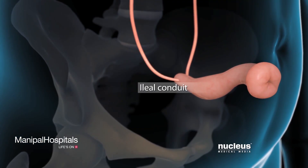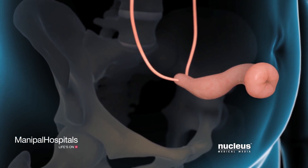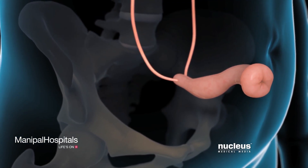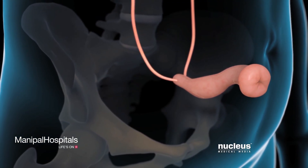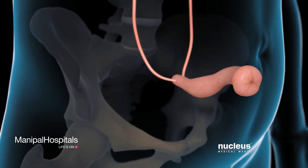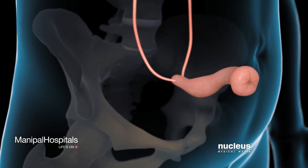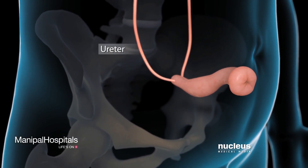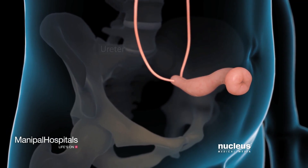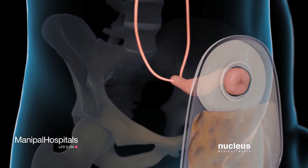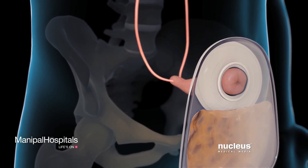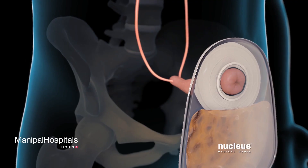If you receive an ileal conduit, one end of the intestinal section will be attached to the surface of your abdomen called a stoma. Your surgeon will seal the other end and attach your ureters to it. Your urine will drain into a bag attached to the stoma.